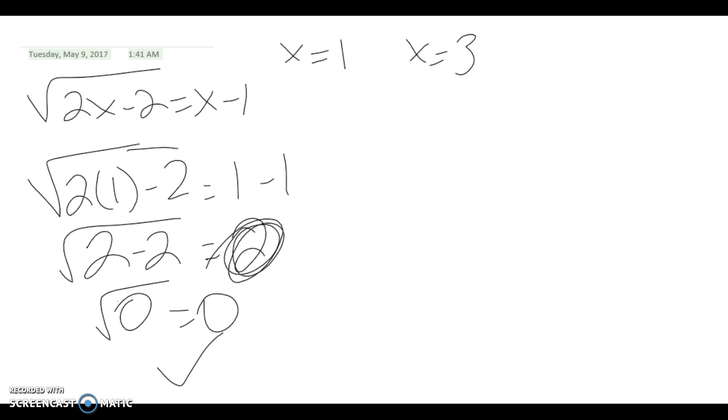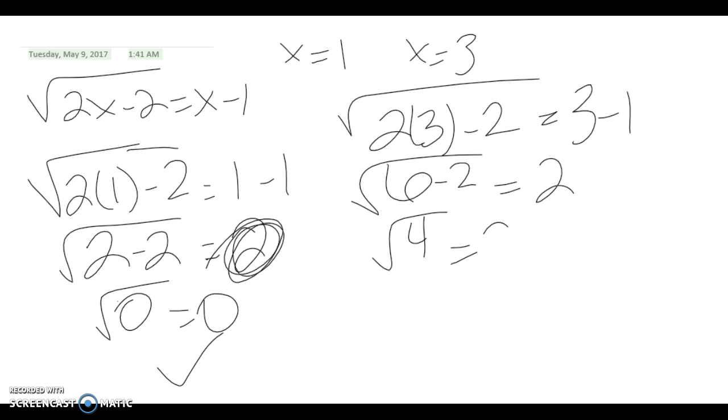And we'll plug in 3. The square root of 2 times 3 minus 2 equals 3 minus 1. That's 6 minus 2 equals 2. 6 minus 2 is 4, square root of 4 is 2 equals 2. So those are both right.